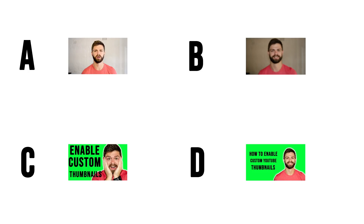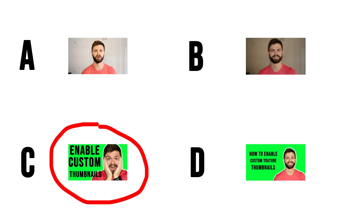You'd click C or D because they give you the most information about what the video is going to be about. These thumbnail sizes represent what you'd see on a normal computer or laptop. But what happens when we decrease the size to what you'd see on a mobile phone? With that size change, we'd probably lean more towards C — it's clearer and we can still read the text. Thumbnail D at the smaller size makes the text unreadable and the person in the picture hard to make out.